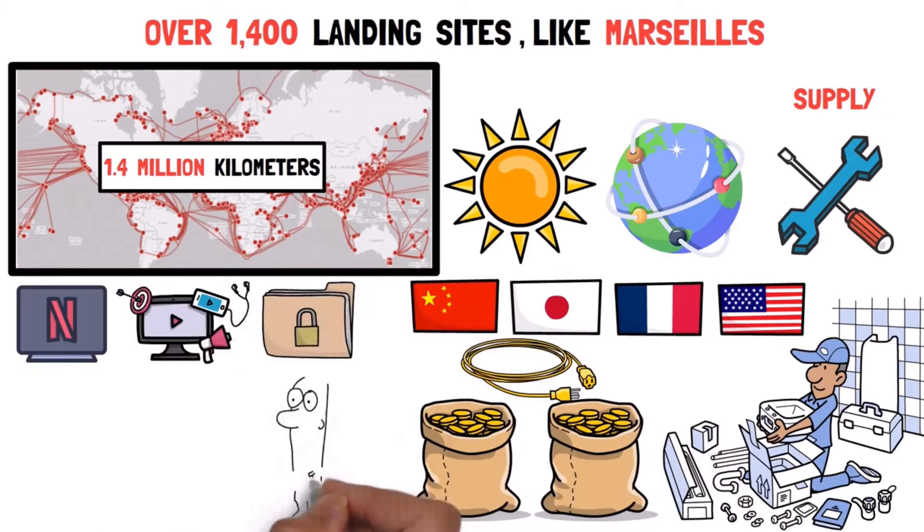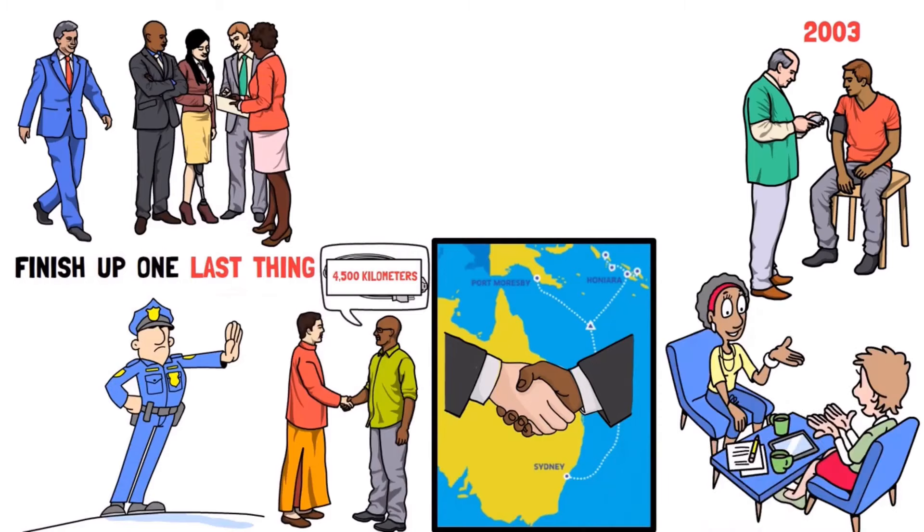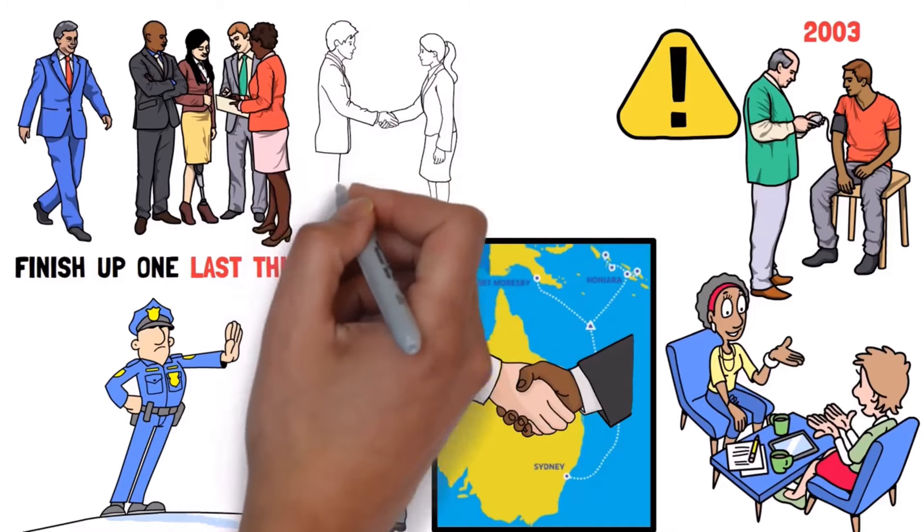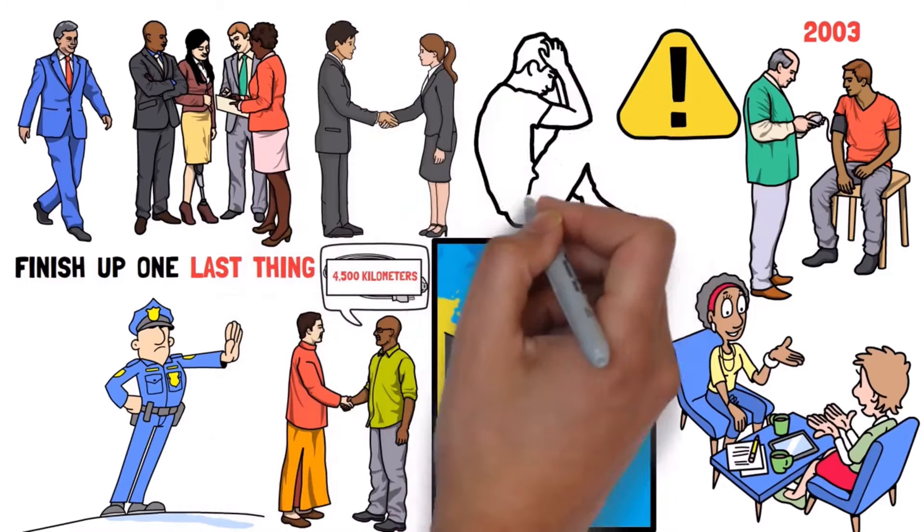They talked about a new long cable, about 4,500 kilometres long, that would connect the capital city of Honiara to Sydney in Australia. This cable was a big deal for the area, and at first, a lot of Western countries and groups wanted to help with it. But there was a problem. Sogavare chose a Chinese company called Huawei Marine to do the project, and this made Australia worried.